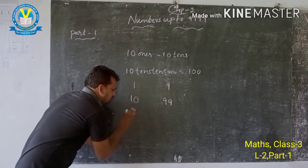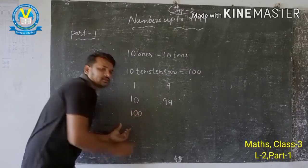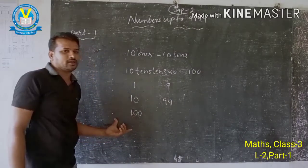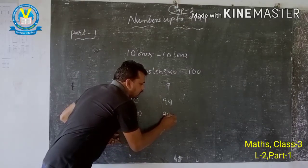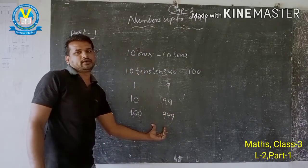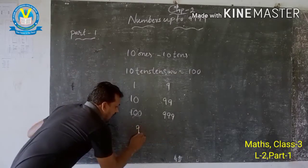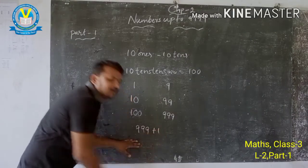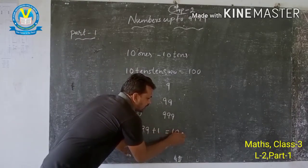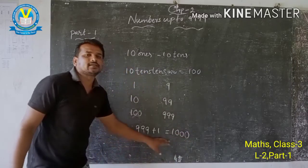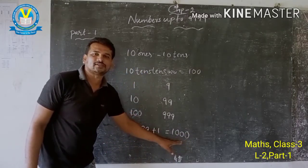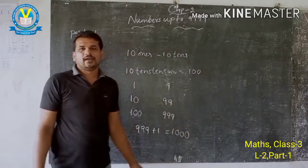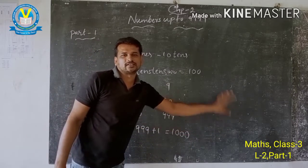In three digits, 100 is the smallest number and 999 is the greatest number. If you add 999 plus 1, you get 1000. 1000 is a 4-digit number, and it is the smallest 4-digit number.